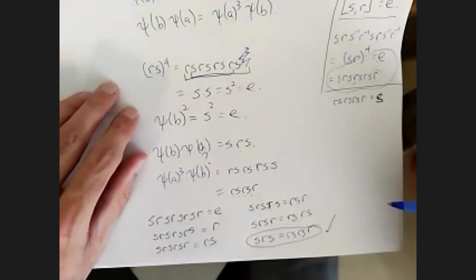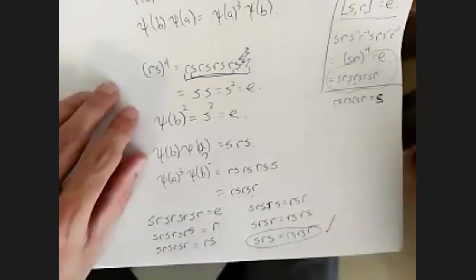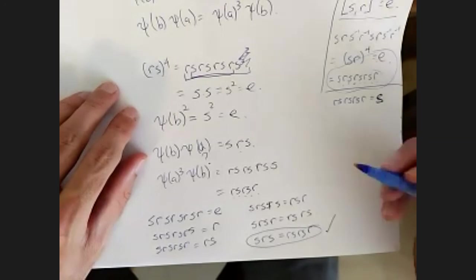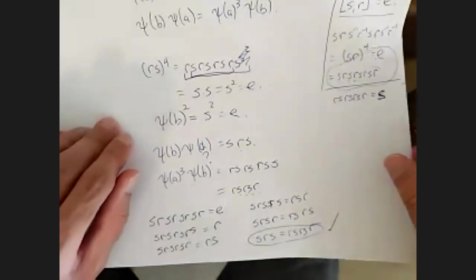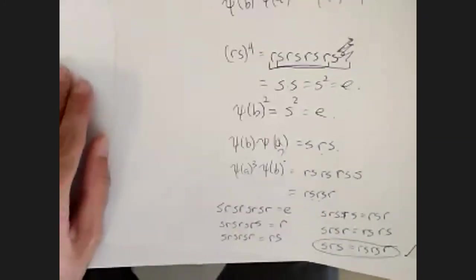So now we have a homomorphism phi from G to D4, and we have a homomorphism psi back from D4 to G. They should be inverses, but we need to make sure of that — let's verify.